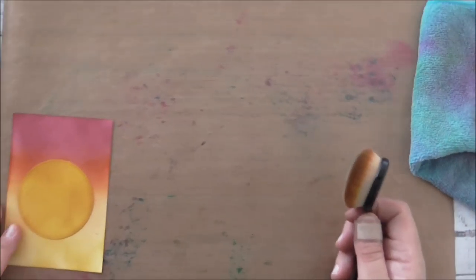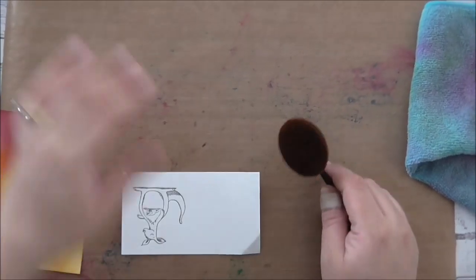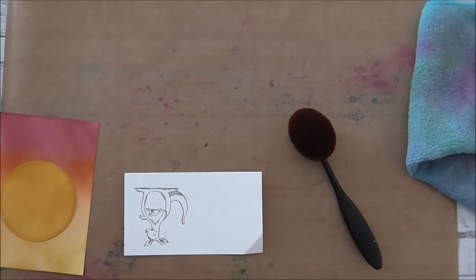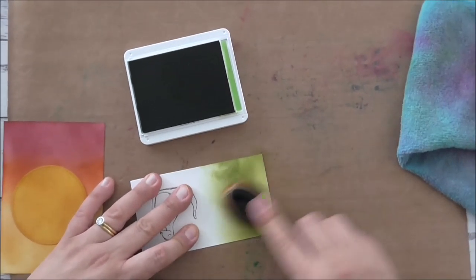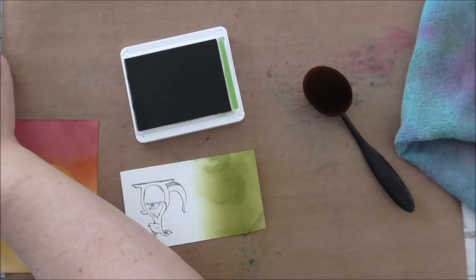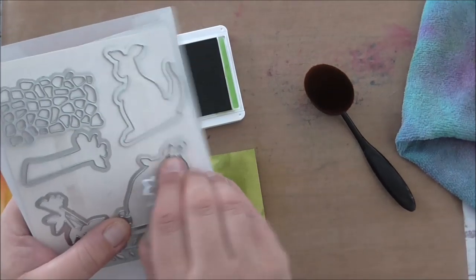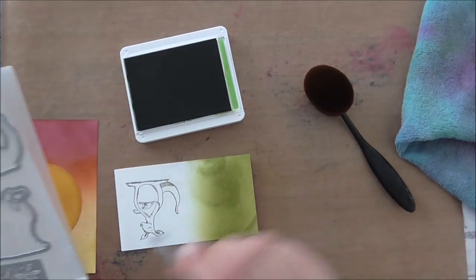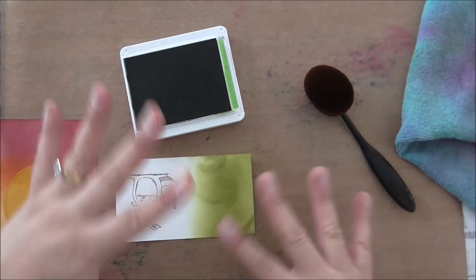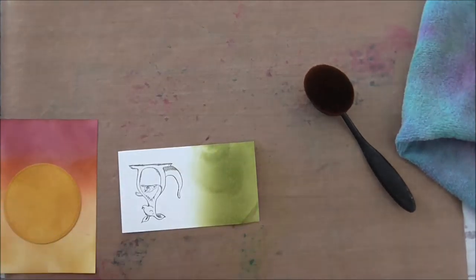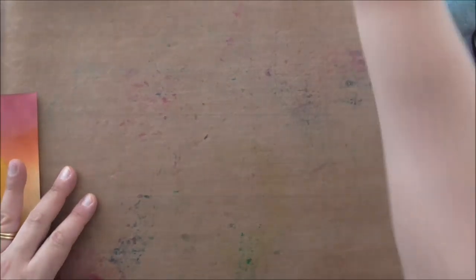Now with my scrap piece of paper where I stamped the kangaroo I'm going to just ink blend some Pear Pizzazz. Now what I want to do with that is with the animal friends dies there's a little branch. I want to cut that out a couple of times, about two or three times. So that's what I'm using that for and I like the look of it. It looks more natural. Okay so that's done.